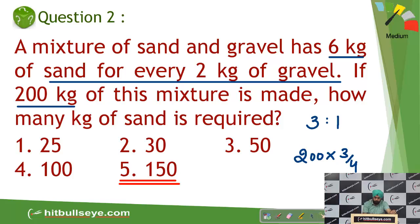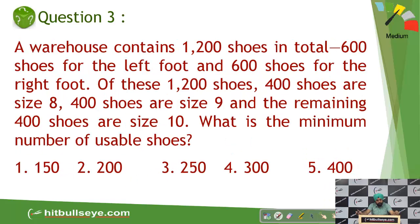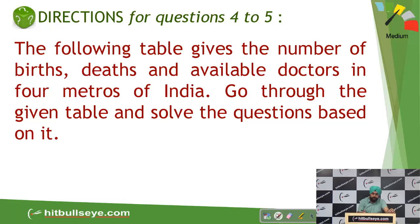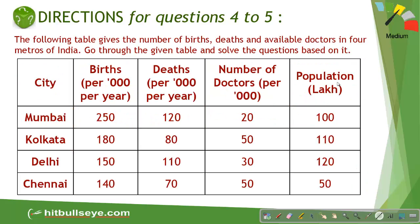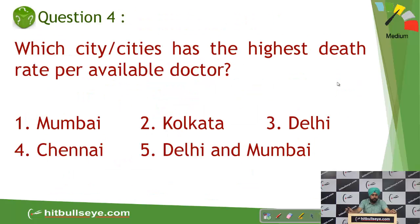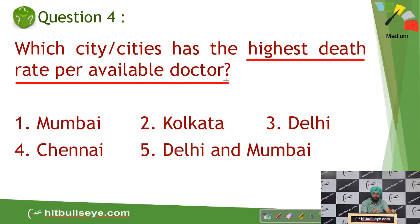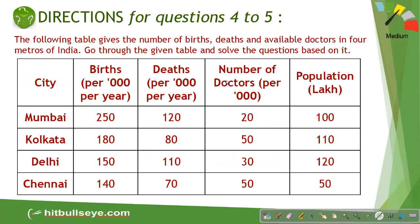Moving on to the next question — you can practice the previous one on your own. Now it's a data set. The table gives the number of births, deaths, and available doctors. The data includes births per thousand per year, deaths per thousand per year, number of doctors per thousand, and population in lakhs. The question is which city has the highest death rate per available doctor. In Mumbai there are 120 deaths and 20 doctors, giving six deaths per doctor.